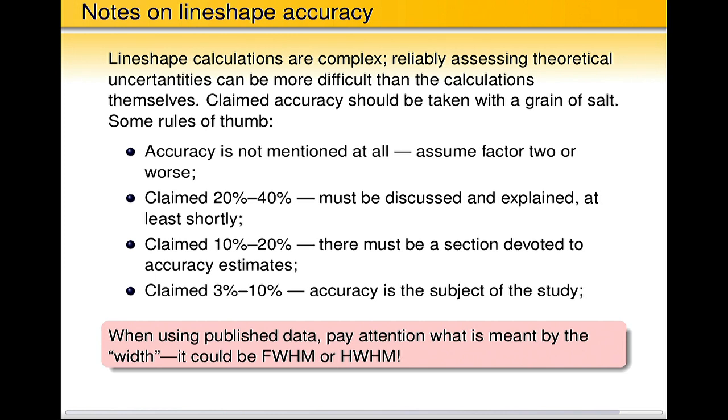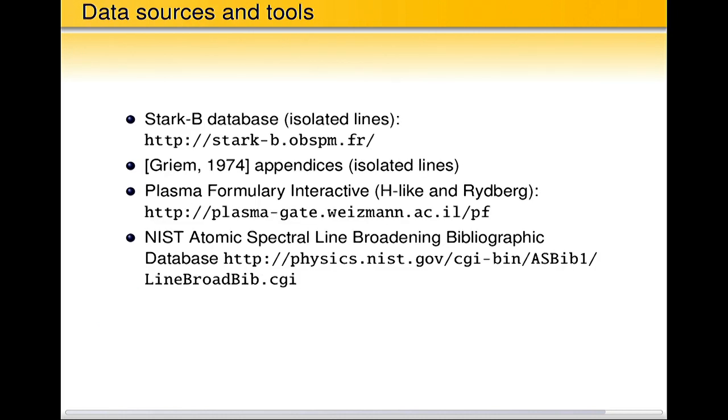One caveat, pay attention. Some data, some published data, when people say width, it might mean full width at half max. Sometimes it means half width at half max. So if you do not pay attention you get that factor two. In addition to factor two that, and that, well sometimes it helps. But who knows? So please, in particular in the book of Hans Grimm, width is half width at half max. But for example in Stark-B database, it's full width at half max. Please pay attention.